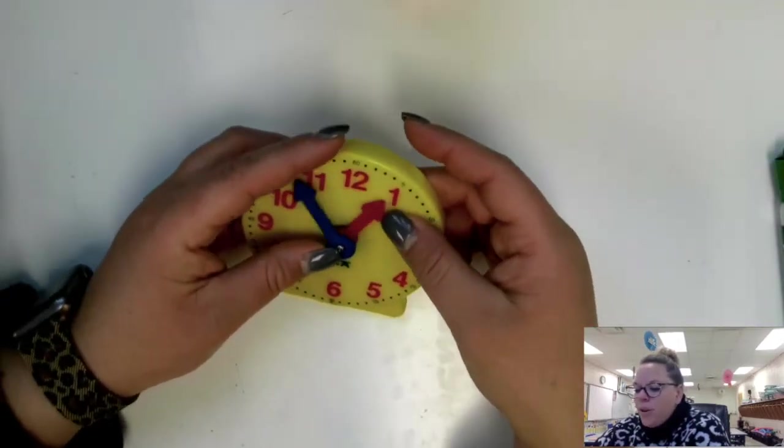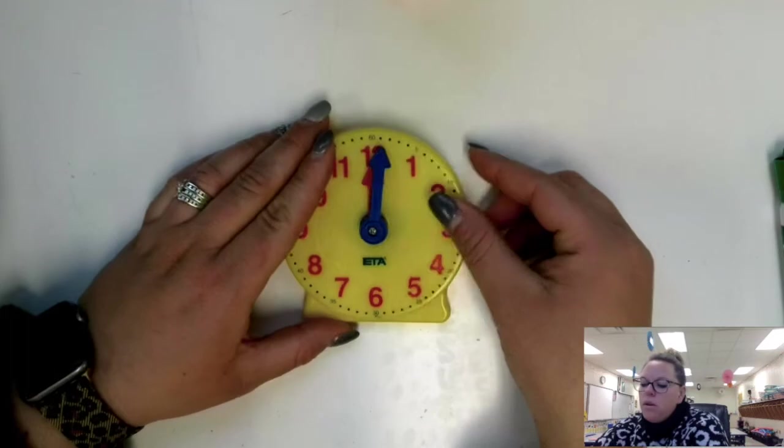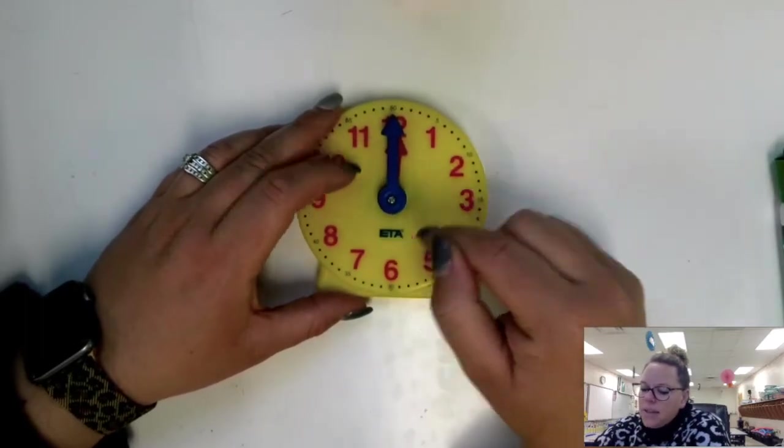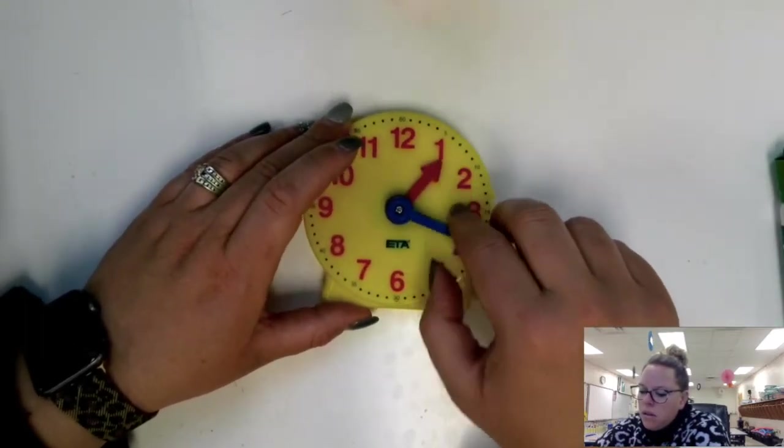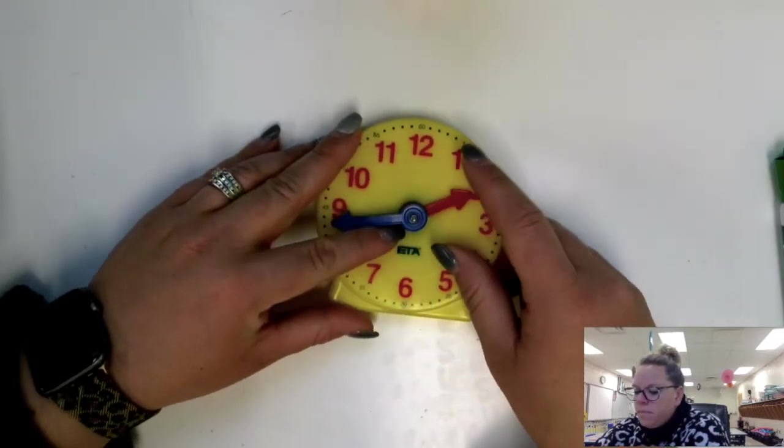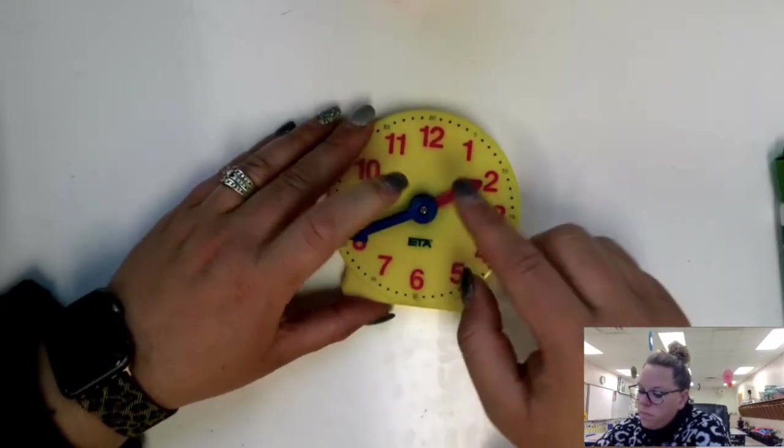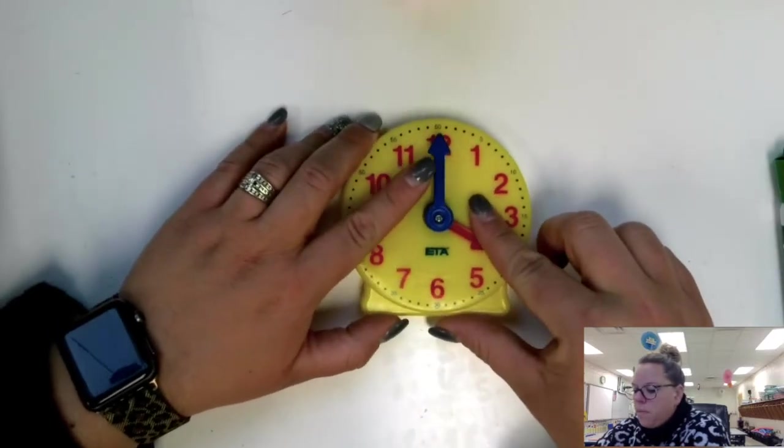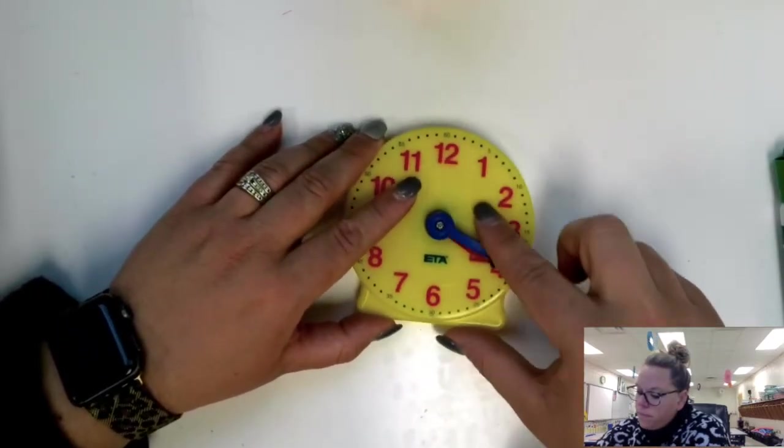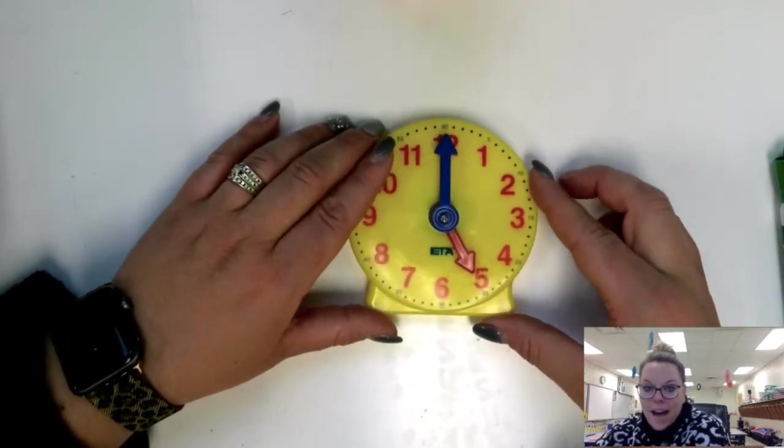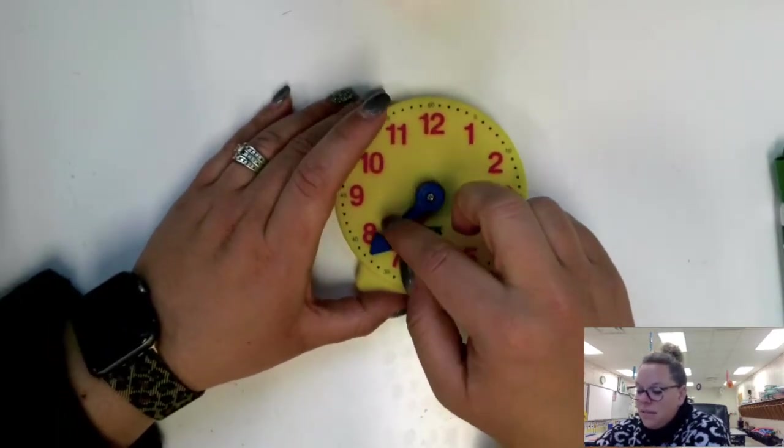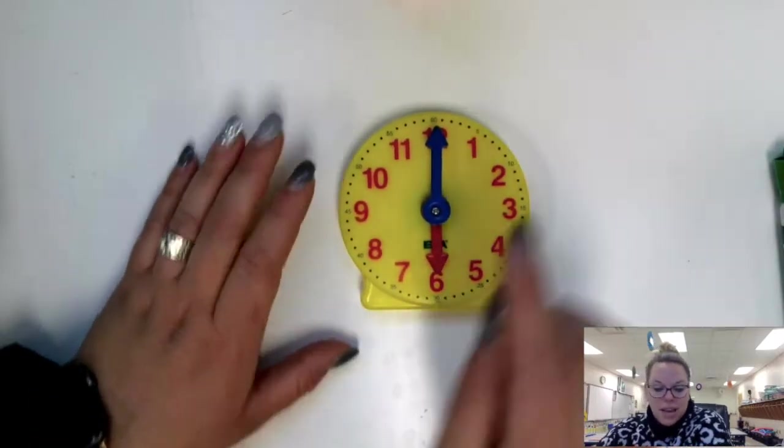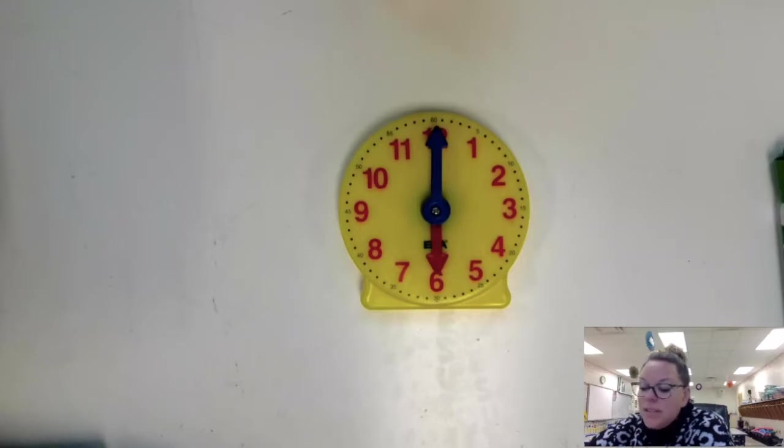What about between noon and 6 p.m.? It means my hour hand has to go around all the time, every hour, until I get to 6. One, two, three, four, five, we need to get to 6, and 6. So between noon and 6 p.m. there were six hours.